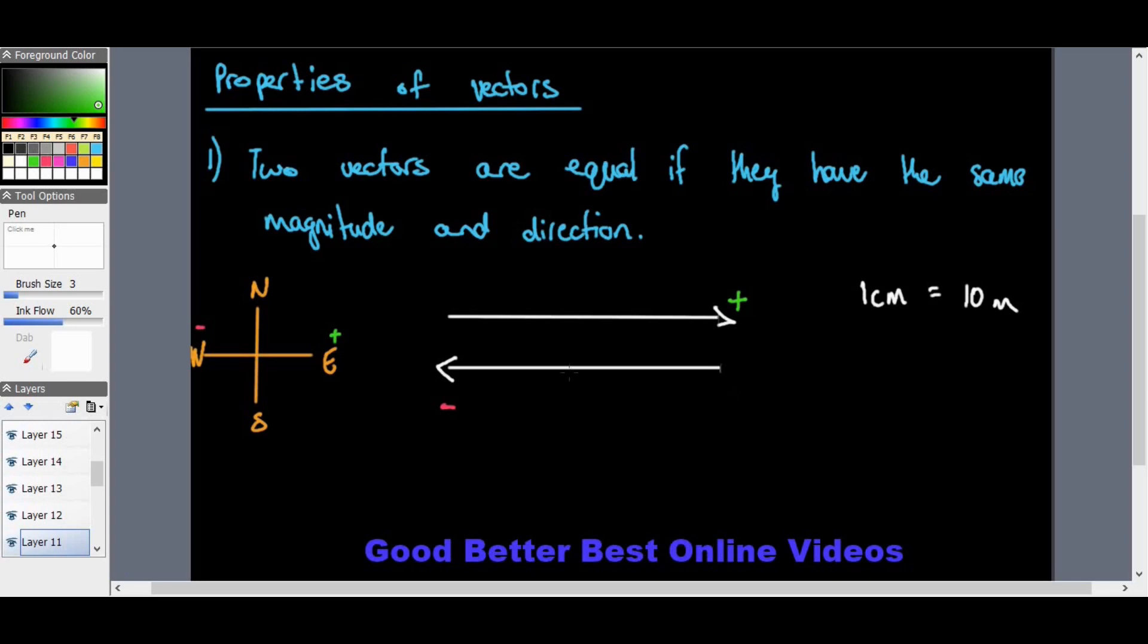We can add vectors by using sign conventions in a straight line. The right would be positive and the left would be negative. For example, 10 plus negative 4 would equal 10 minus 4, which equals 6.